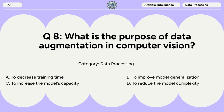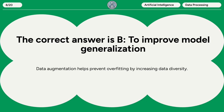Question 8. What is the purpose of data augmentation in computer vision? A. To decrease training time. B. To improve model generalization. C. To increase the model's capacity. D. To reduce the model complexity. The correct answer is B: to improve model generalization. Data augmentation helps prevent overfitting by increasing data diversity.